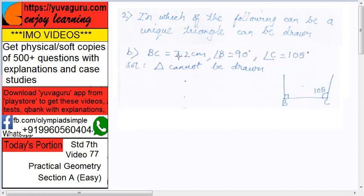Next, BC equals 7.2 centimeter, angle B equals 90, and angle C equals 105. Can triangle be drawn here? This length is given, then BC is 90, and C is 105.